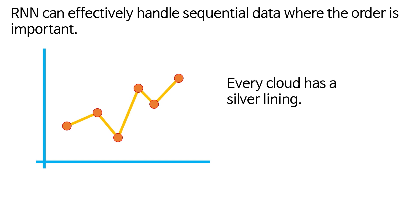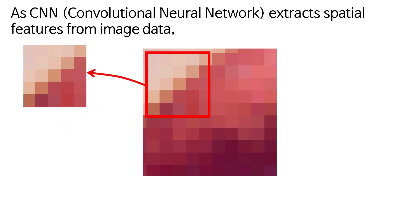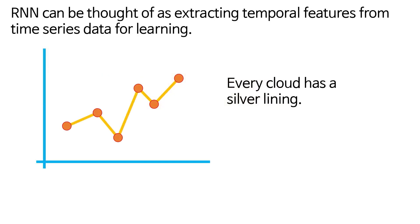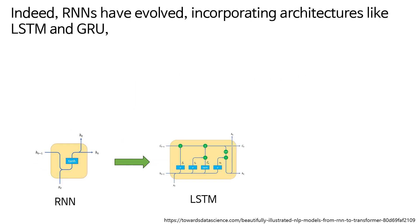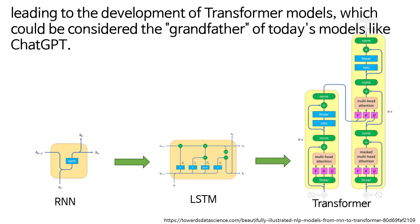It can effectively handle data where the order is important. If a CNN extracts spatial features from image data, RNN can be thought of as extracting temporal features from time series data for learning. Indeed, RNNs have evolved, incorporating architectures like LSTM and GRU, leading to the development of transformer models, which could be considered the grandfather of today's models like ChatGPT.